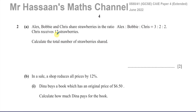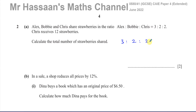We start off with ratios. It says: Alex, Bobby and Chris share strawberries in the ratio Alex to Bobby to Chris = 3 to 2 to 2. Chris receives 12 strawberries. Calculate the total number of strawberries shared. So we've got to find the total amount of strawberries — Alex, Bobby, Chris in ratio 3 to 2 to 2.